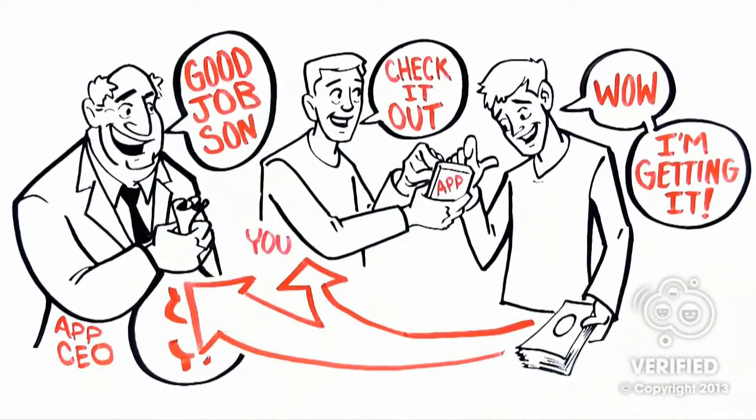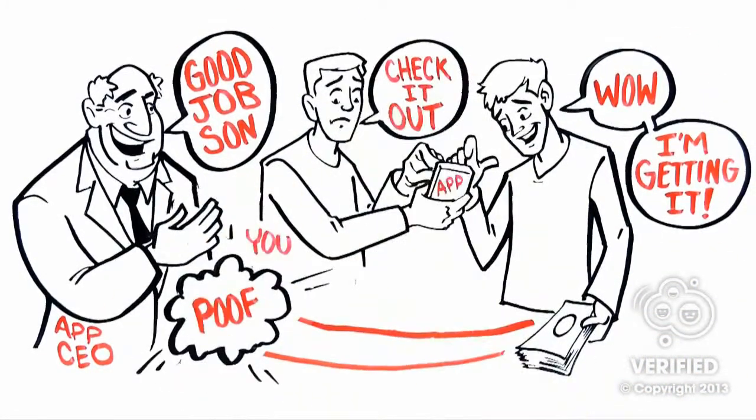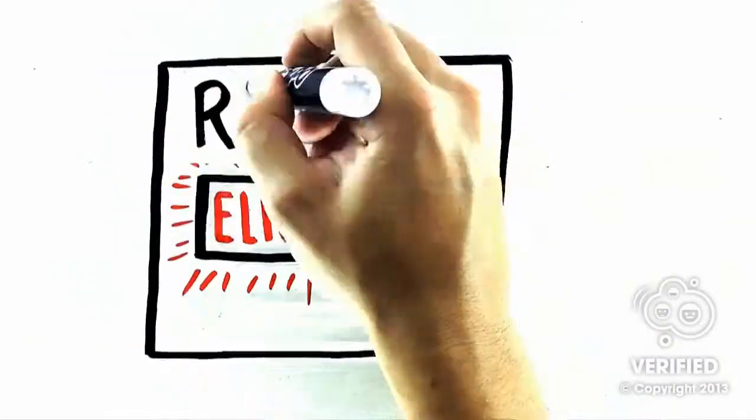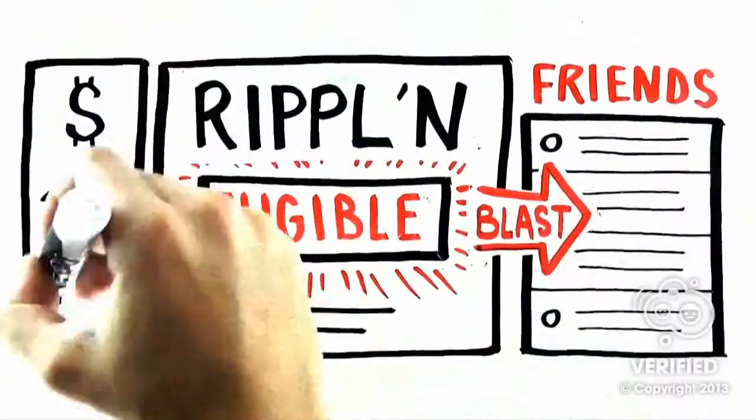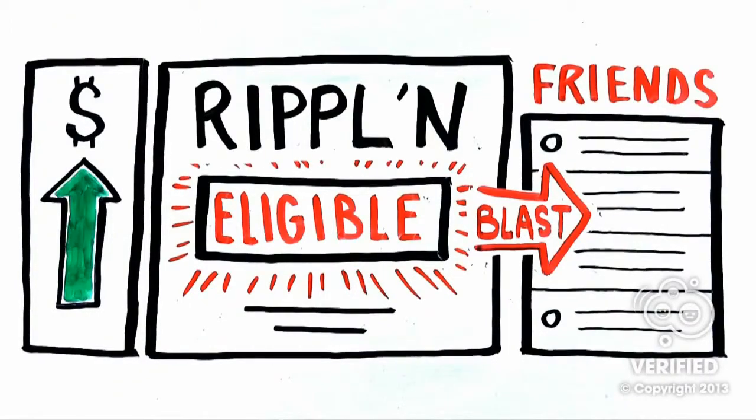Instead of telling your friends and making the company millions while you get nothing, simply check to see if they're eligible for Ripplin commissions, and then blast them through your entire ripple for a great payday every time. Doesn't that sound cool?